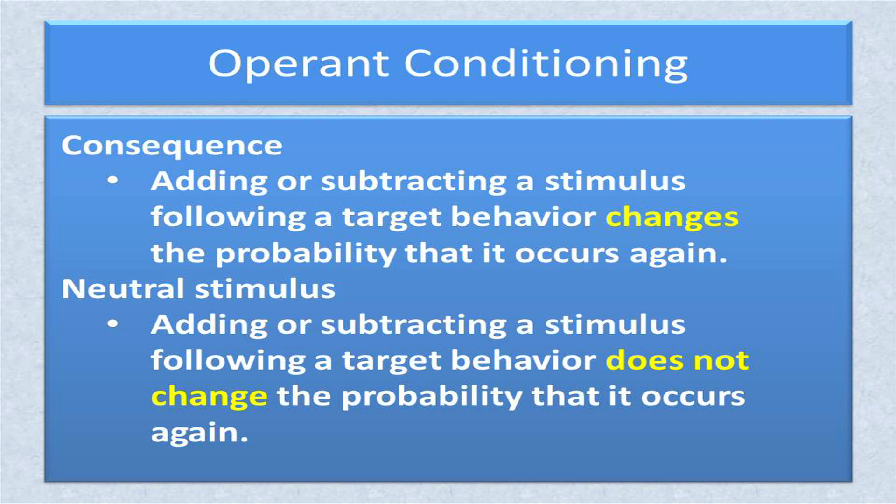In this sense, operant conditioning always works. Either the behavior changes after the application of a stimulus — in which case the stimulus is labeled a consequence — or it does not, in which case the stimulus is labeled a neutral stimulus. If behavior changes, then operant conditioning was used. If behavior does not change, then operant conditioning was not used.